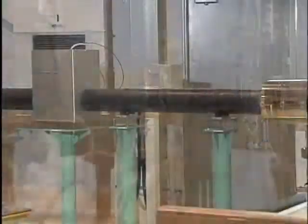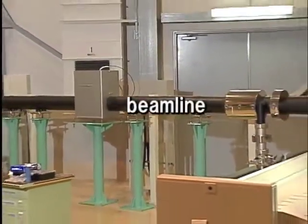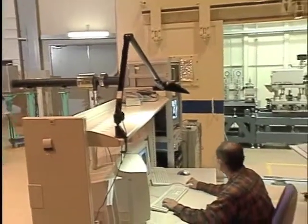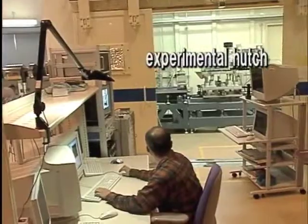Synchrotron radiation produced in this way is transported through beam lines to hutches in the experimental hall. The experimental hutches are equipped with various measuring apparatus.